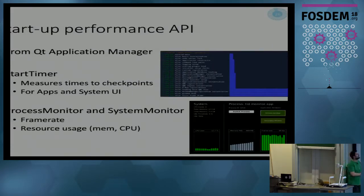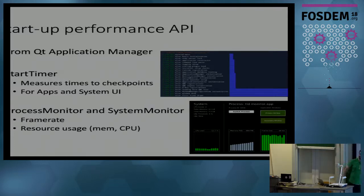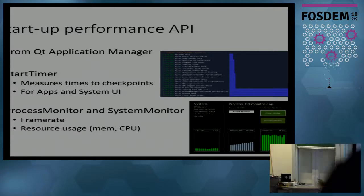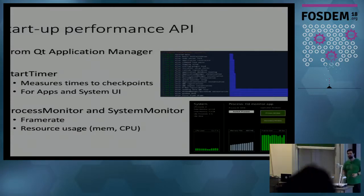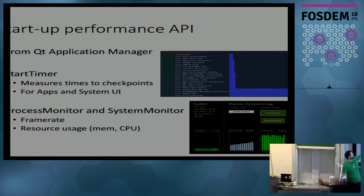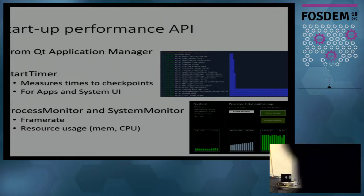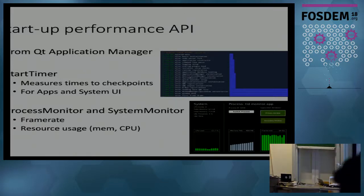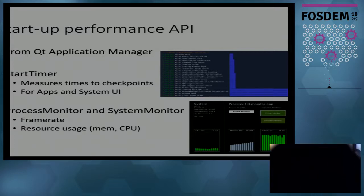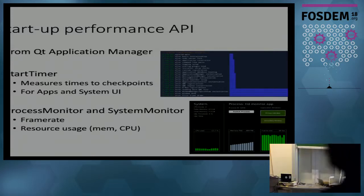We also have support APIs in Application Manager to measure performance. We have a start timer which allows you to simply declare checkpoint A, checkpoint B, checkpoint C as you start your program, and you get fancy graphs showing where you spent your time, measuring startup time. You can do this both for the System UI and for application instances. We also have process monitor and system monitor APIs, which go into the System UI or a debugging service, where you can measure frame rate for an individual process or the whole system, CPU usage in total or per process — it's a good debugging tool.